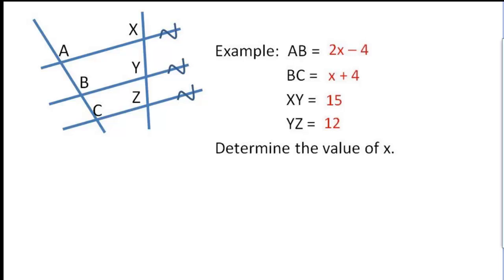Alright, one last example to talk about here. And it comes right, this is a great application of the corollary we just talked about. If AB is 2X minus 4, I'm just going to run that right over here. And BC right below it is X plus 4. And then on the other side we know XY is 15 and YZ is 12. Then we should be able to figure out the value of X. Of course before we can figure out the value of X, we need an equation of some sort. Now we don't know that AB is congruent to BC. So we can't just go ahead, in fact I can promise you they're not. Because if this thing were congruent to that thing, then this would have to be congruent to that. And simply, that ain't the case.